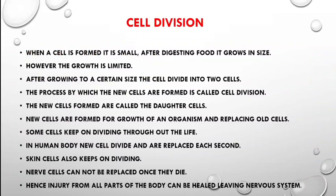After growing to a certain size, the cell divides into two cells. The process by which new cells are formed — that is, when an old cell divides into two new cells — is called cell division.